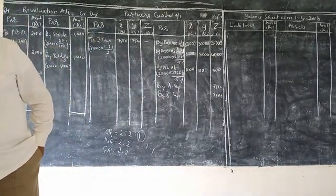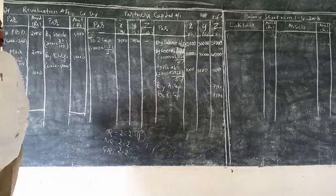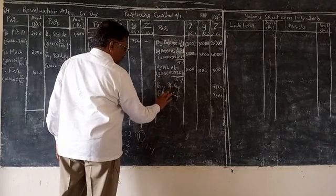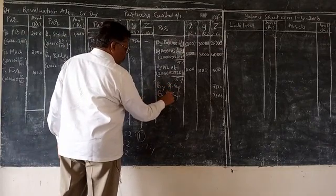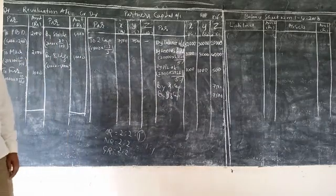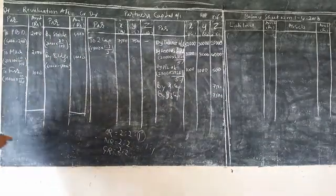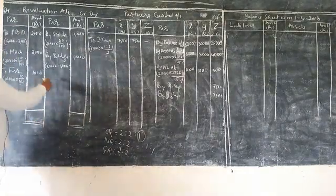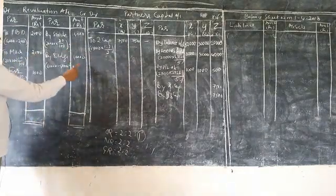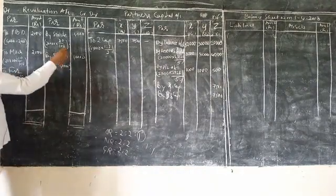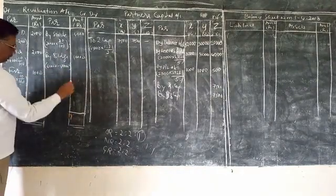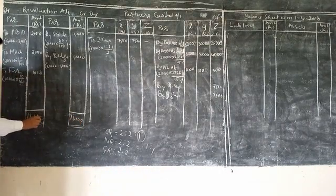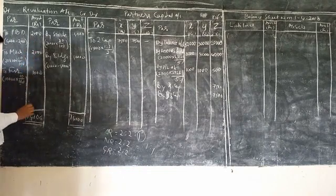X capital account, Y capital account entries. Totals: how much? 65,500, 14,000, 14,000. Goodwill 15,000 distributed as 7,500 and 7,500.